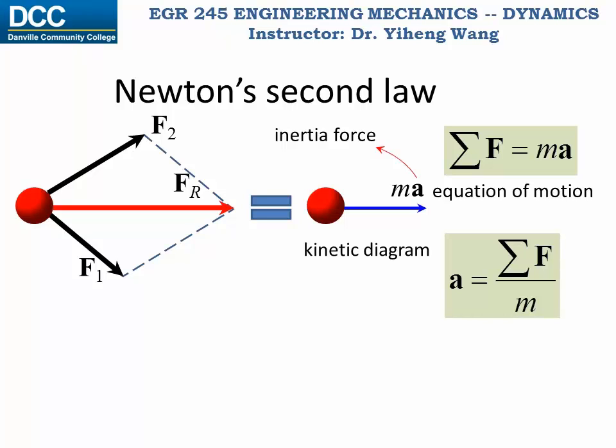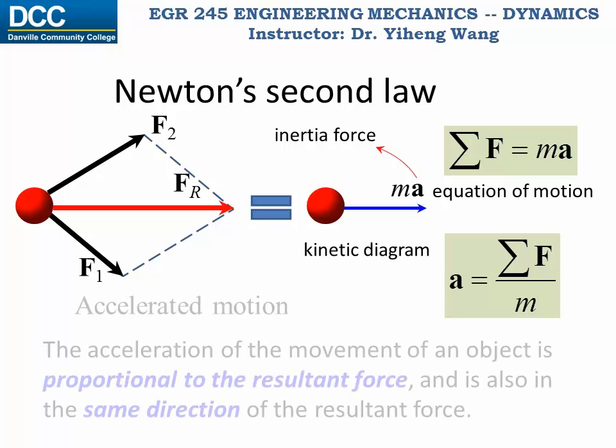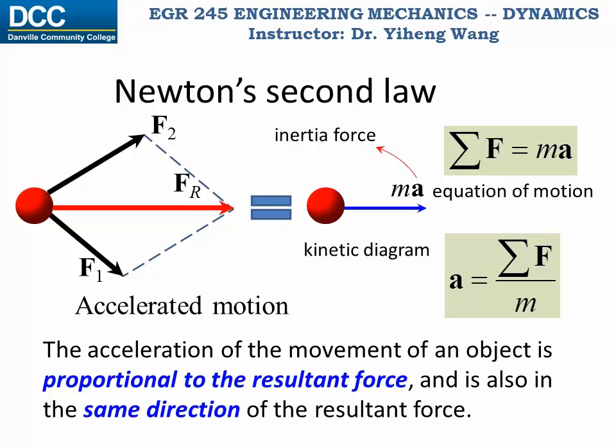And from this formula you should also appreciate how mass of the object being on the denominator serves as the inertia to motion. Mass resists change in motion of the object. So with a non-zero acceleration, the object is doing accelerated motion, and the acceleration is in the same direction of the resultant force. This is Newton's second law, the most fundamental law in our class of dynamics.